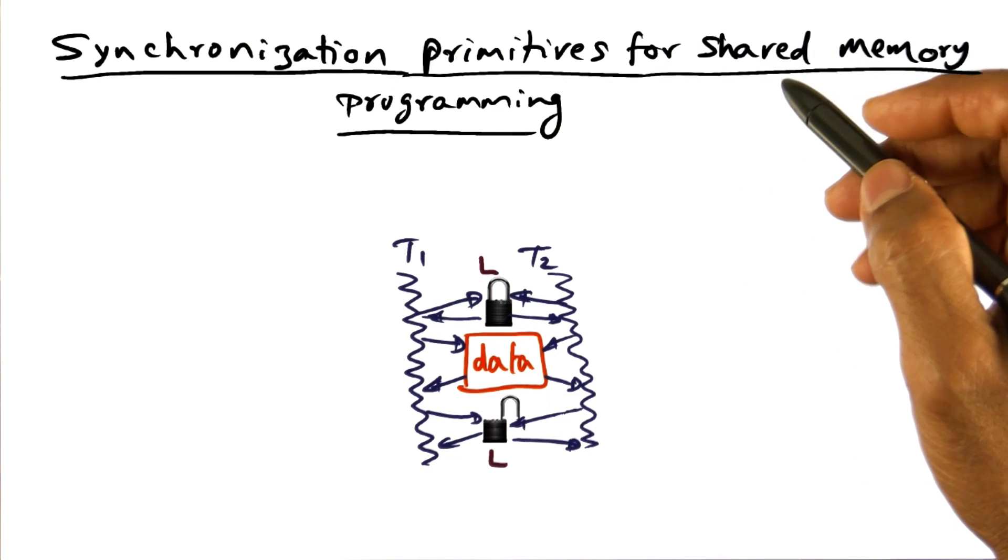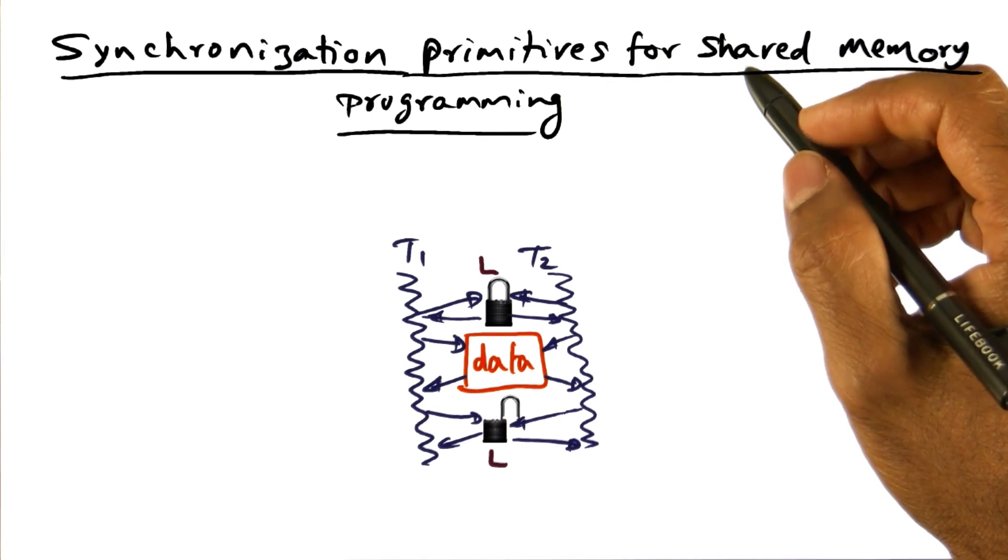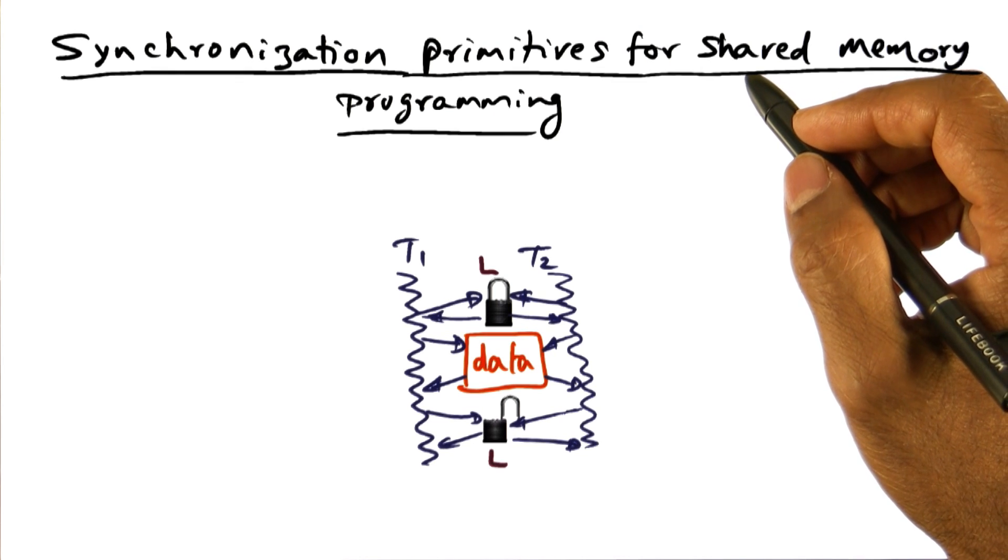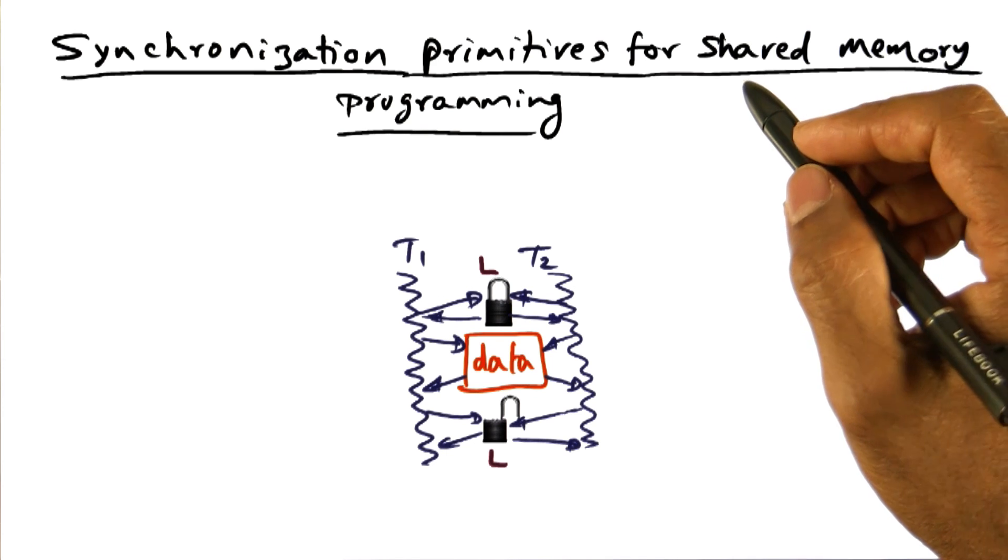Synchronization primitives are key for parallel programming. In your first project, you implemented a threads library which provides the mutual exclusion lock. Let's talk about locks.